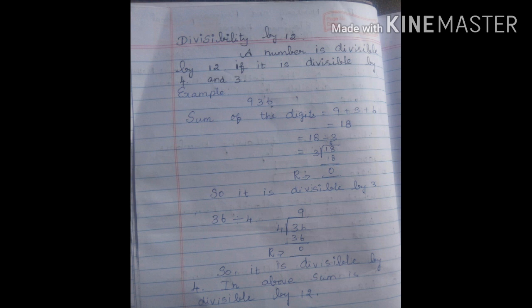First, let's look at the example of 936. Let's apply rule 3 and 4. The sum of the digits: 9 plus 3 plus 6 equals 18. 18 divided by 3 is 6, 3 times 6 is 18. Next, 18 subtract 18 equals 0. So the remainder value is 0, so it is divisible by 3.